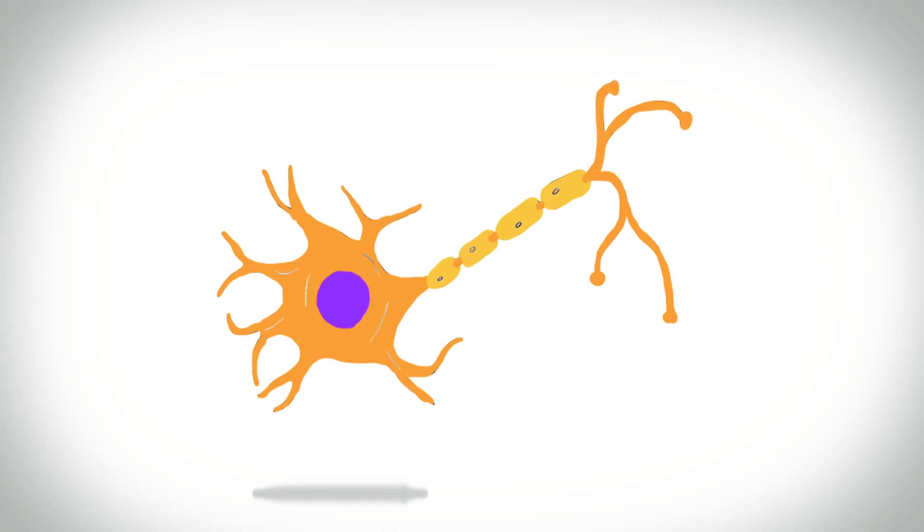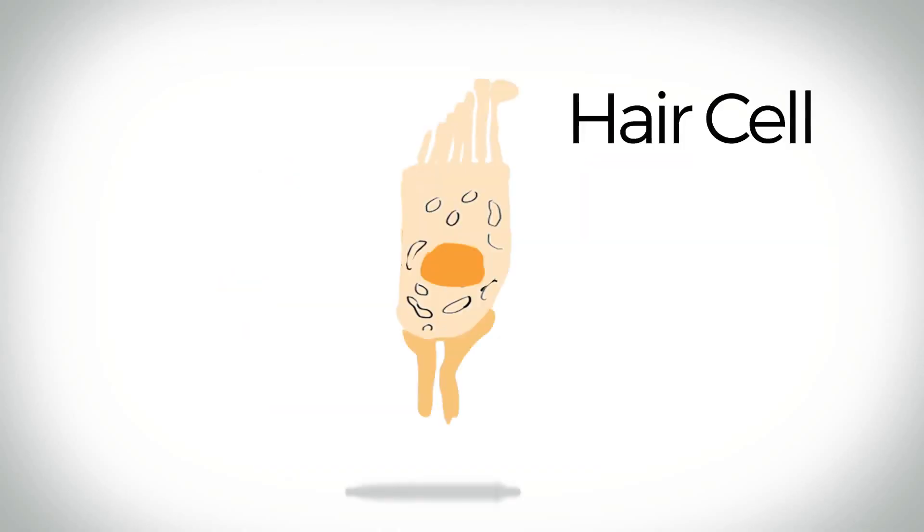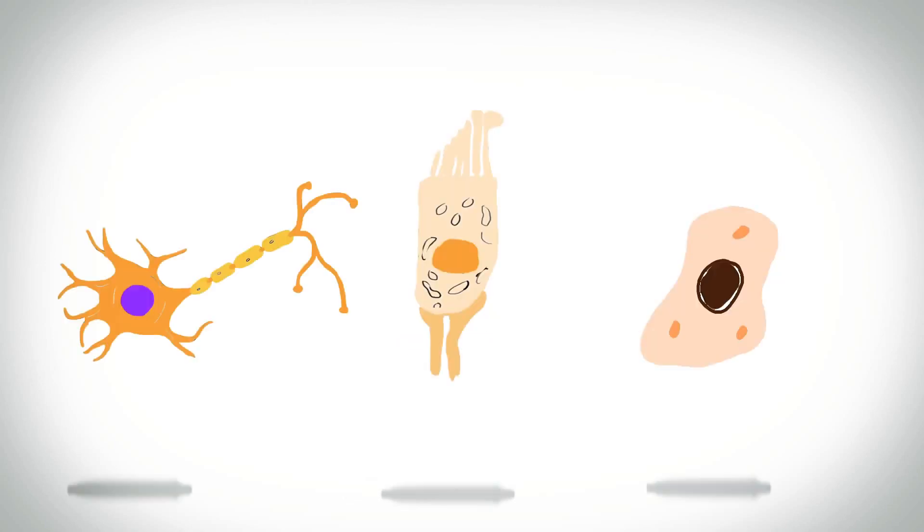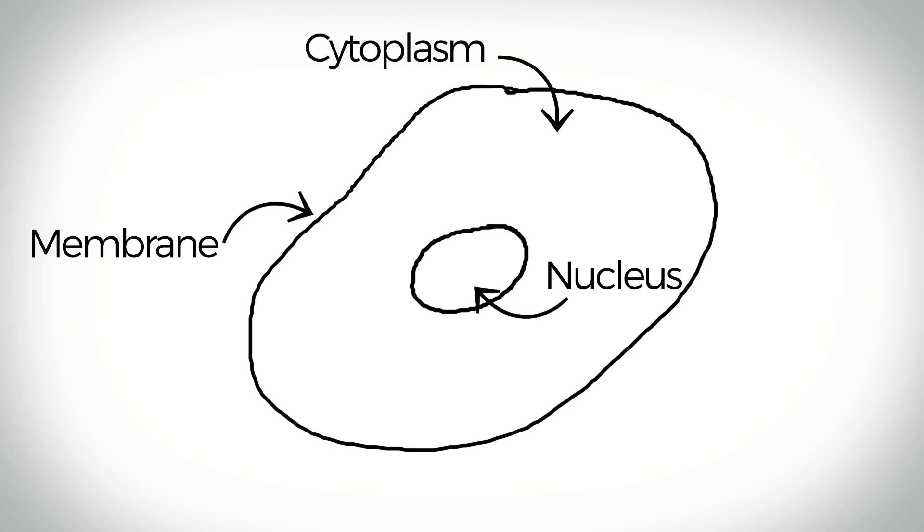There are many different types, like nerve cells, hair cells, and skin cells. They all have different shapes and forms, but every cell has the same basic parts. The cell has an outer border called the membrane, which contains a liquid material called cytoplasm. In the cytoplasm is the nucleus, and inside the nucleus are chromosomes.